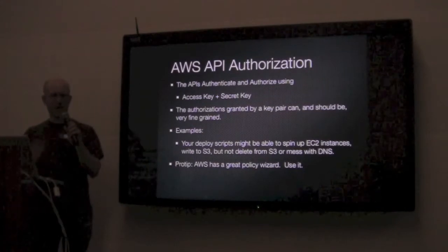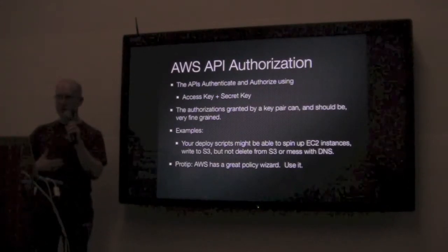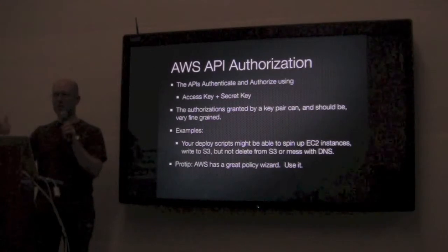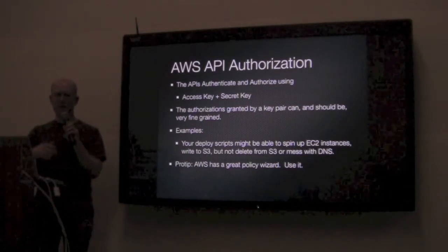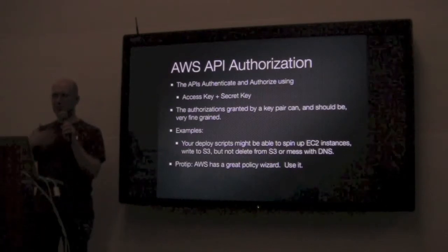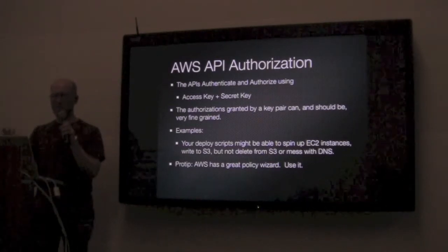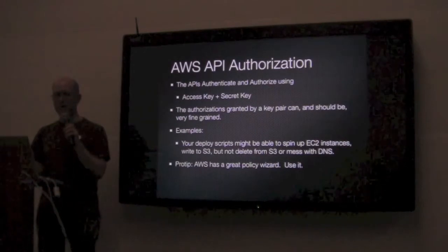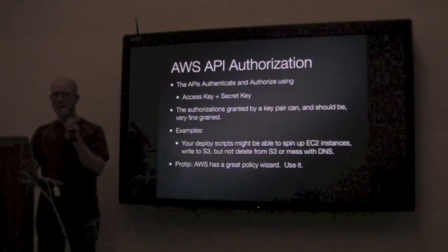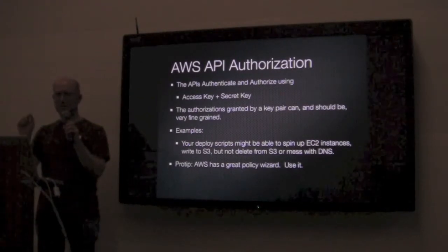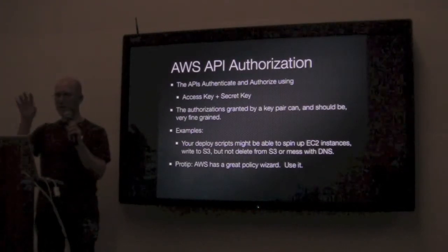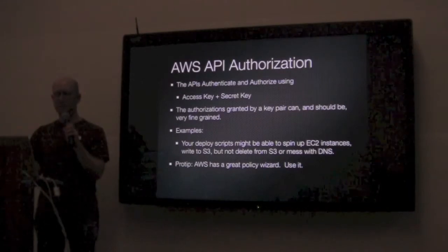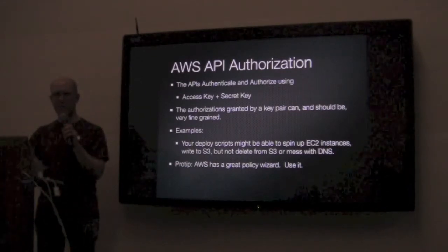You want access keys with very fine-grained permissions. You don't want keys that can just destroy everything, because you will probably typo something at some point. For example, a deployment script might need to spin up EC2 instances and write to storage, but you might not want it to be able to delete all your DNS records or destroy all your data. Go look for the AWS Policy Wizard in the web console — it lets you specify exactly which API calls those keys are allowed to make.